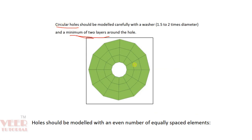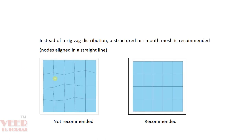Here we can see on this hole we have one layer and two layers. If the area around the hole is large enough, we can take two layers of elements. We should also avoid zigzag meshing — here the mesh is zigzag, and again here it is zigzag. We have to make sure the mesh is straight and has a good flow.